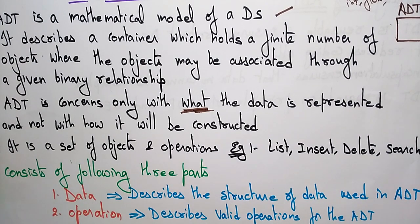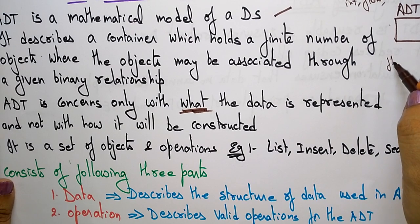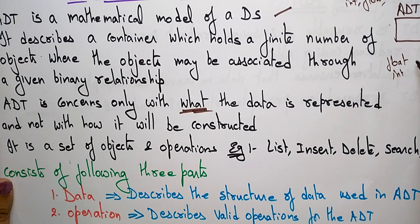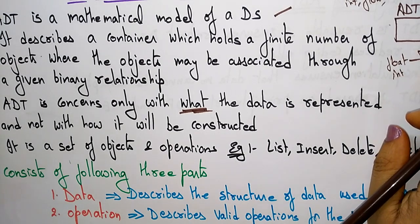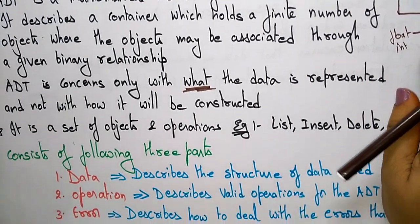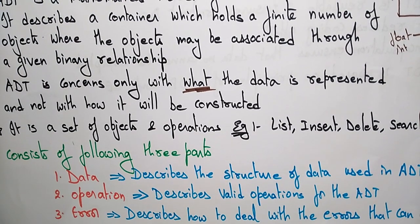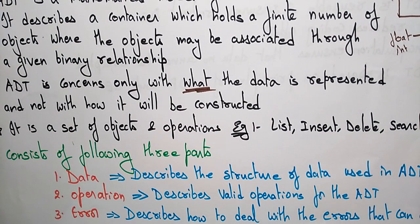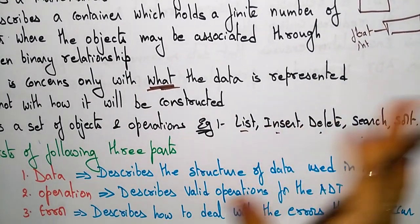It doesn't care about the implementation of that data type — it just focuses on what the data is represented, whether it holds float or integer data, thinking about the range of data represented and not with how it will be constructed. It is a set of objects and operations.